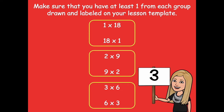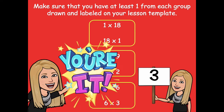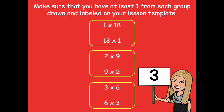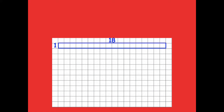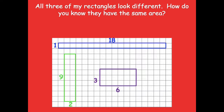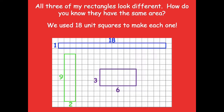Make sure you have at least one rectangle from each factor pair drawn and labeled on your lesson template. Here on my lesson template I have 1 by 18, 9 by 2, and 3 by 6 — all three rectangles look different. How do you know they have the same area? Because we used 18 square units to make each one.